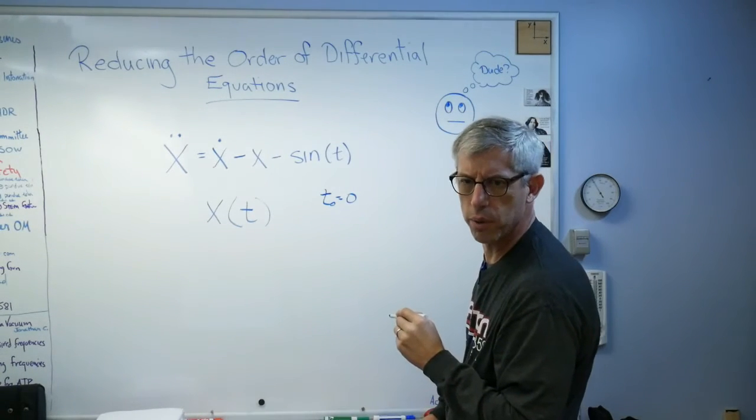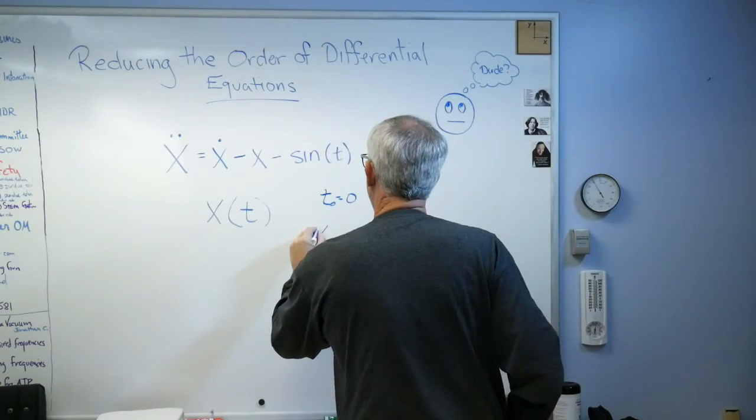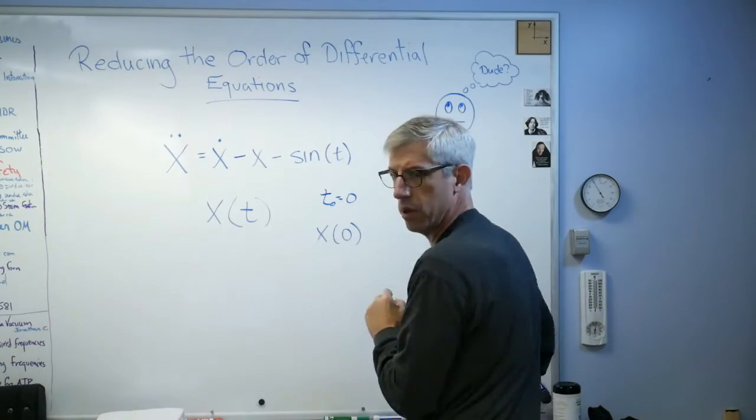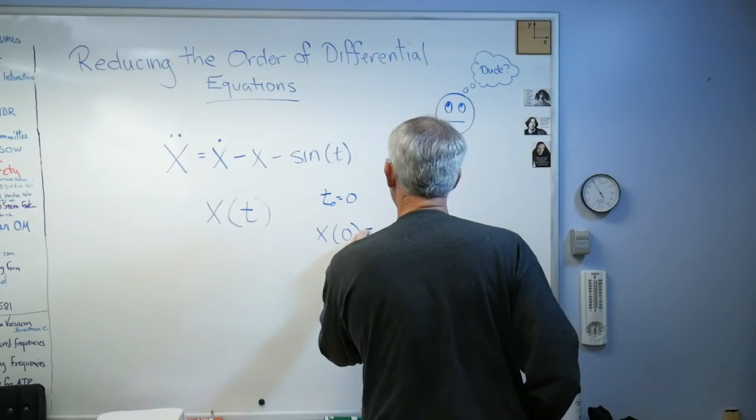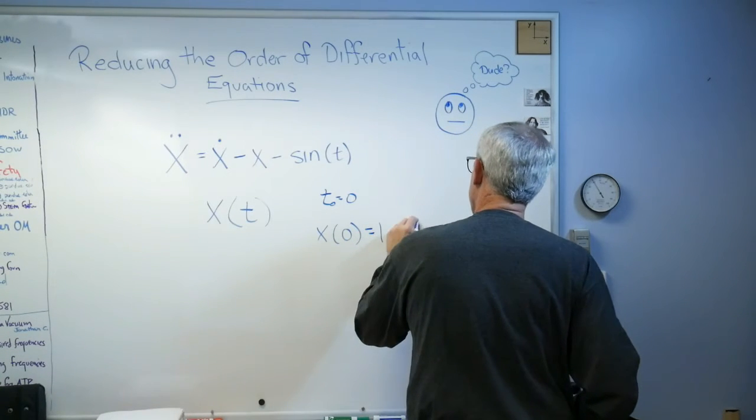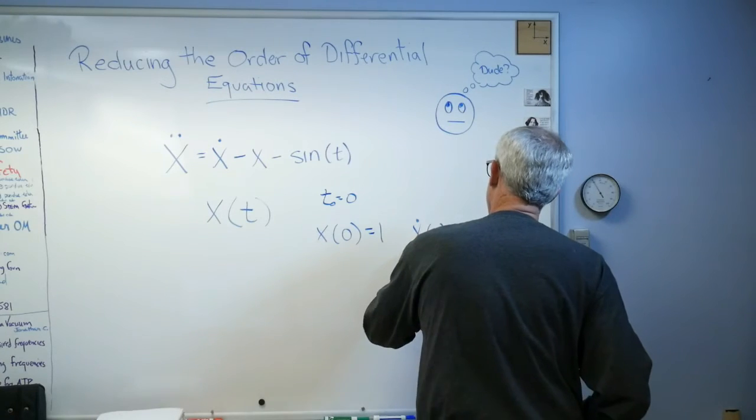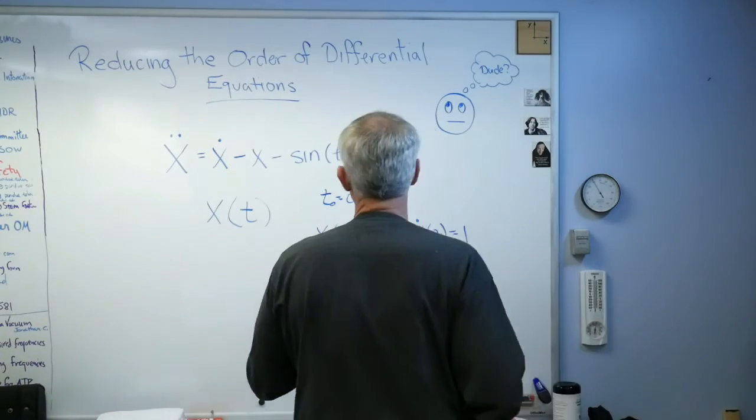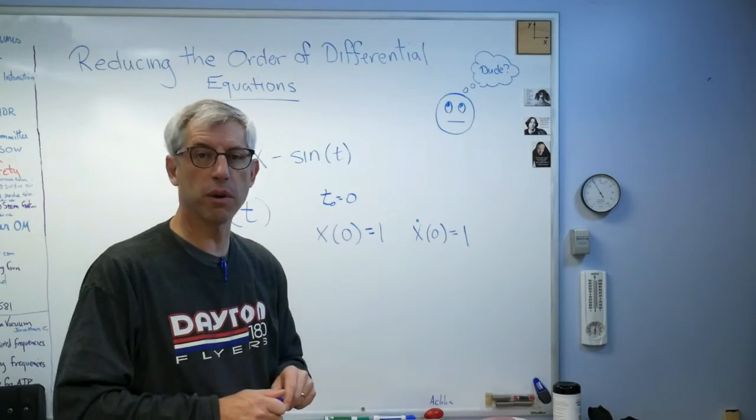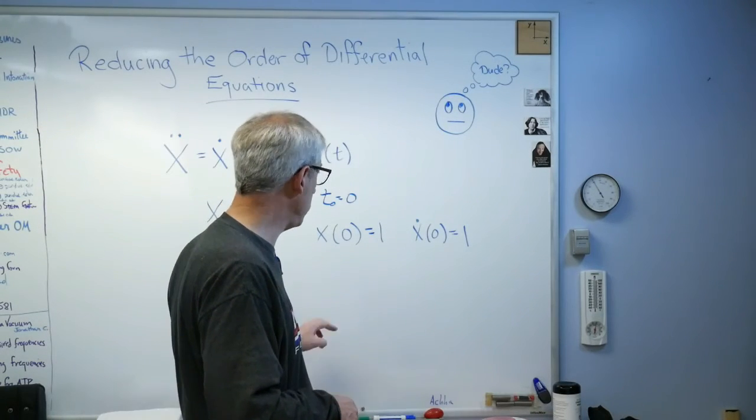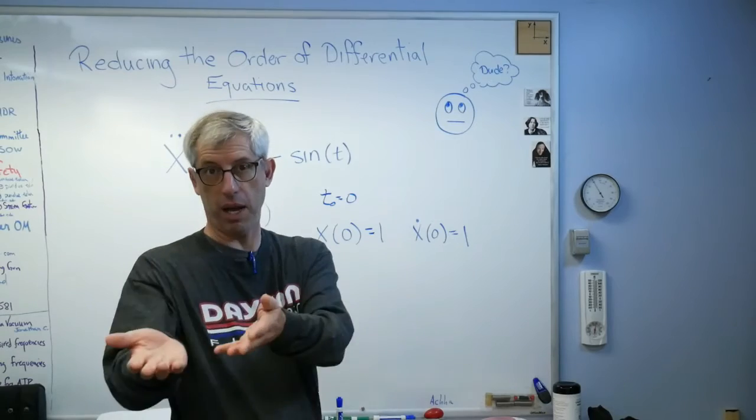I said that t0 equals 0, and I said x of 0 equals 1 and x dot of 0 equals 1. Okay, so those are the initial conditions. That's what I'm trying to do here. If you want to put this into your favorite number crunching package, use those. It does work out. At least I got it to work out.